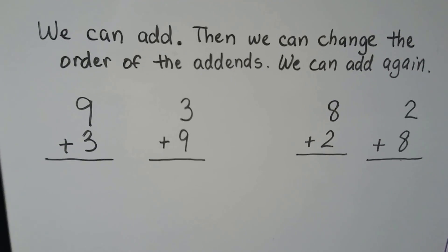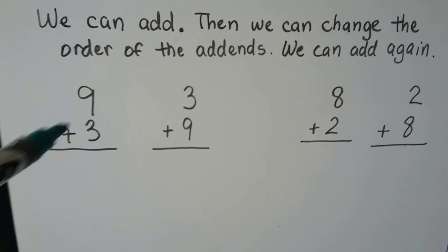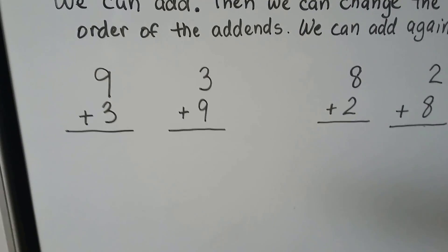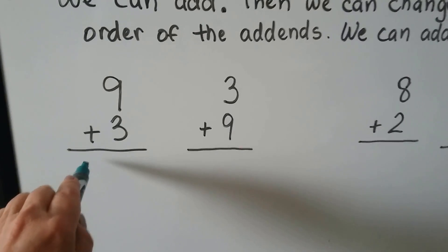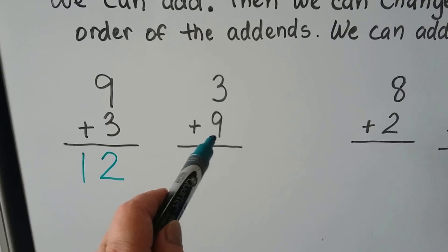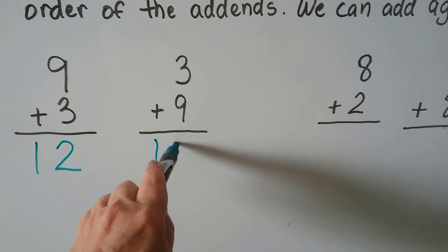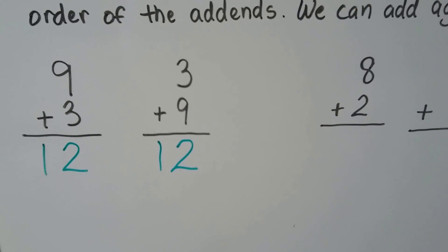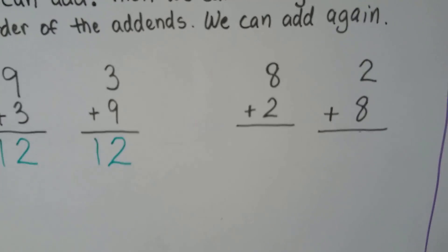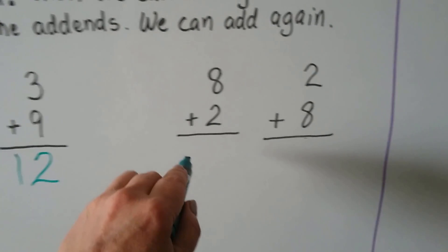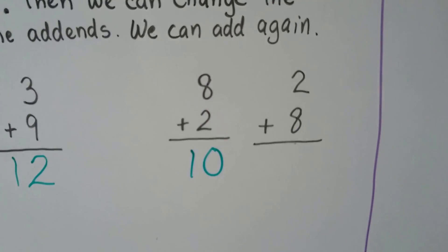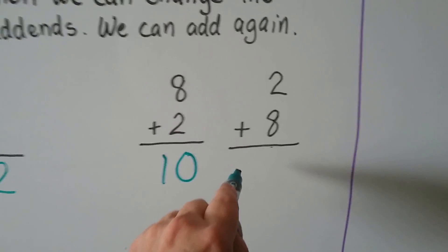We can add, then change the order of the addends and add again. Nine plus three: we start with the greater number nine — nine, ten, eleven, twelve. When we change the order and put the three on top and the nine on the bottom, it's still twelve. Eight plus two: we start with the greater number eight — nine, ten. If we change the order and put the two on top and the eight below, it's still going to be ten because we can add in any order.